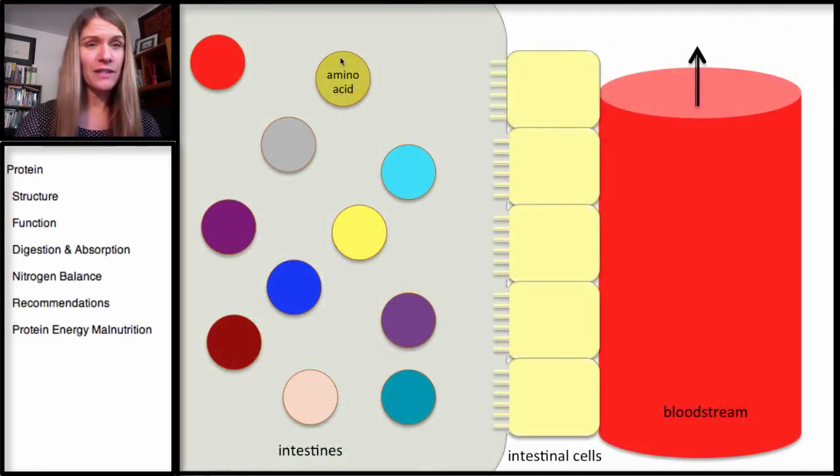Now, once we have these individual amino acids, let me orient you. This is the intestines, this is the intestinal cells, and then they're attached to the bloodstream.